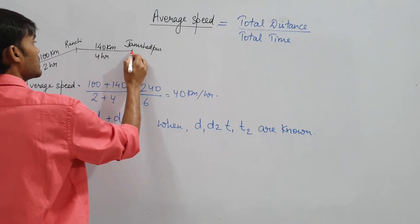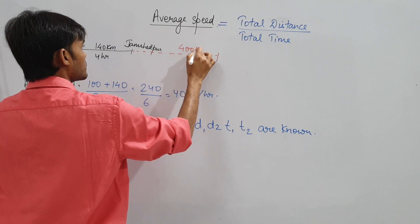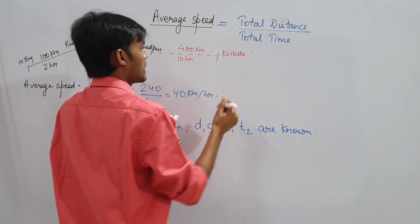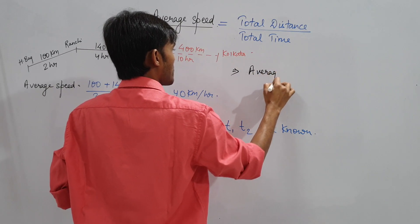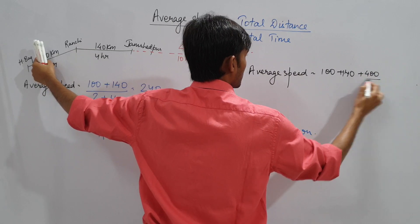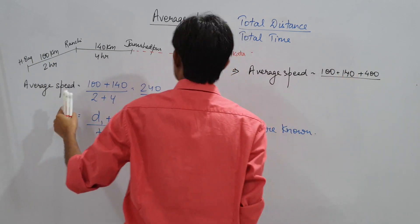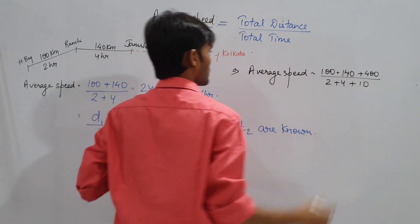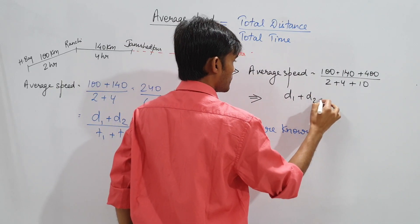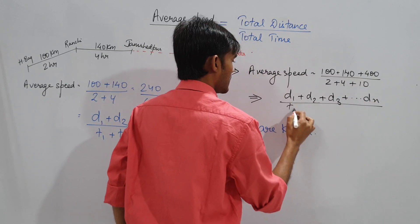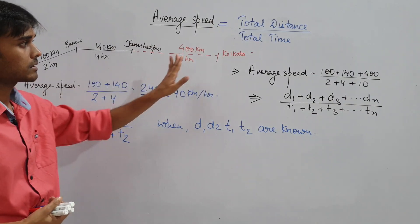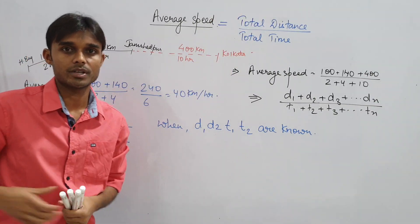Also understand that if the journey continues — say from Jamshedpur to Kolkata, 400 km, taking 10 hours — then our average speed would be total distance: 100 plus 140 plus 400, divided by total time. The formula is not limited to two segments; it generalizes to D1 plus D2 plus D3 up to Dn, divided by T1 plus T2 up to Tn.